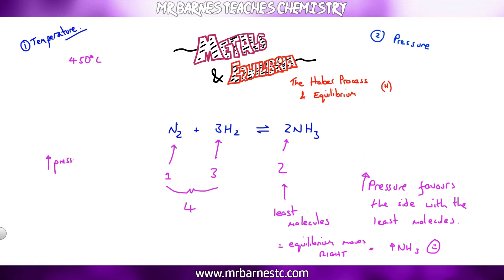However if you increase the pressure it increases the cost. You've got to be able to have a container that's strong enough to go to that pressure and that costs a lot of money. So what we do is we go with 200 atmospheres and again that's a compromise between cost and yield.